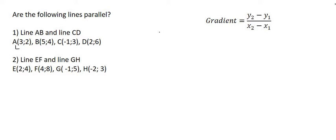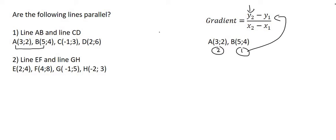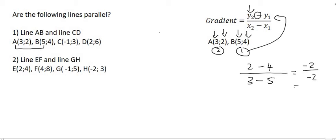So let's see what the gradient of AB is. So here are AB's coordinates. I'm going to call A point number 2 and B point number 1, and then use the formula exactly as I see it. So the formula starts with Y2, which is the Y value of point number 2, which is 2, minus the Y value of point number 1, which is 4, over the X value of point number 2, which is 3, minus the X value of point number 1, which is 5. And that's going to give us minus 2 over minus 2, which is 1. So the gradient of AB is 1.